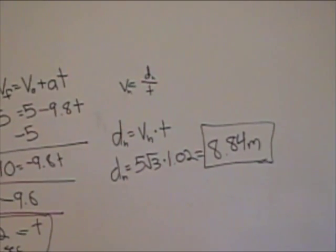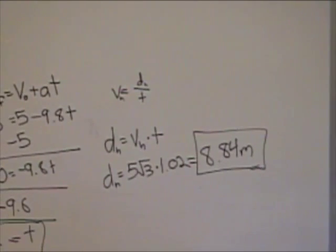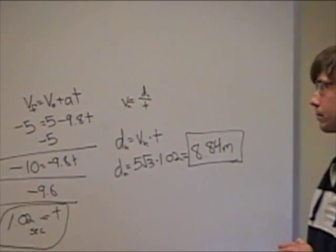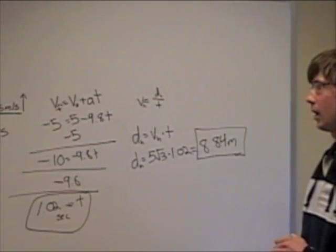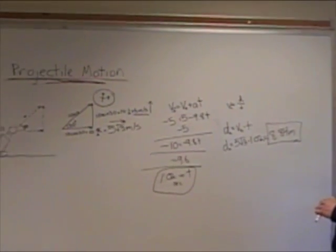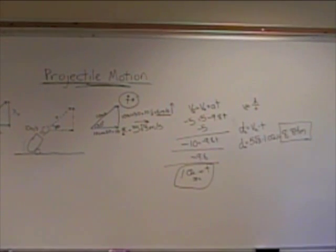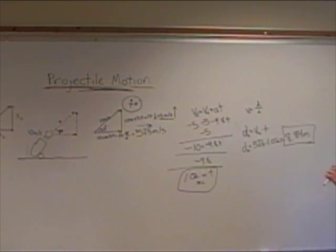So that's great. So now we know how far this cannon can shoot at this angle. This can be useful for other areas, trying to figure out how far you can throw a baseball, how long it takes for something to fall. You can actually judge height by this, by how long it takes for something to fall.